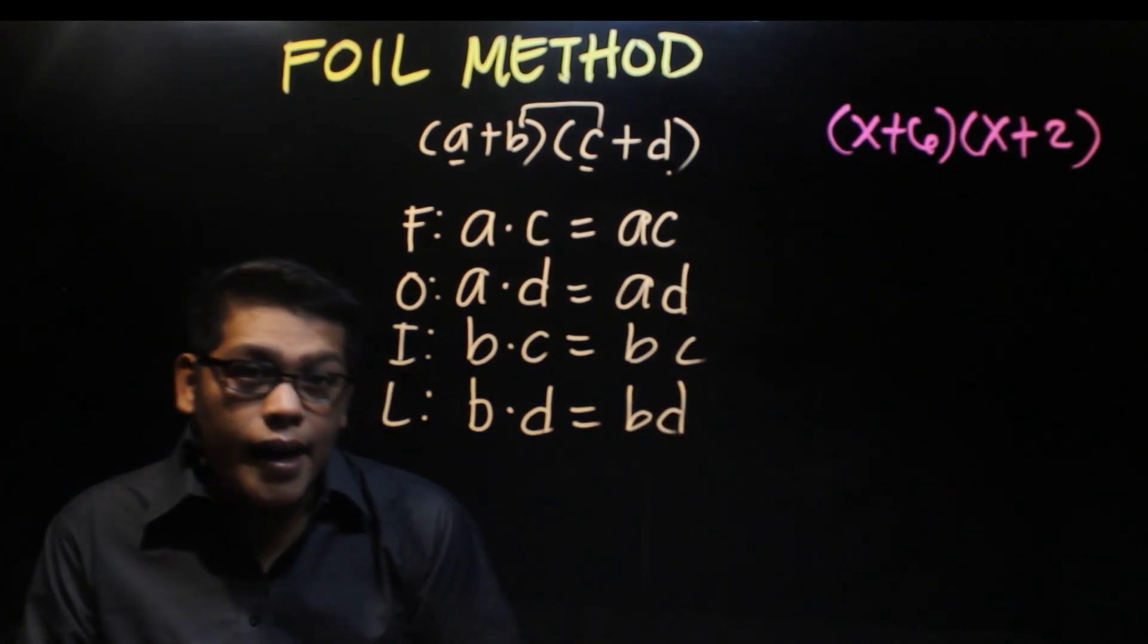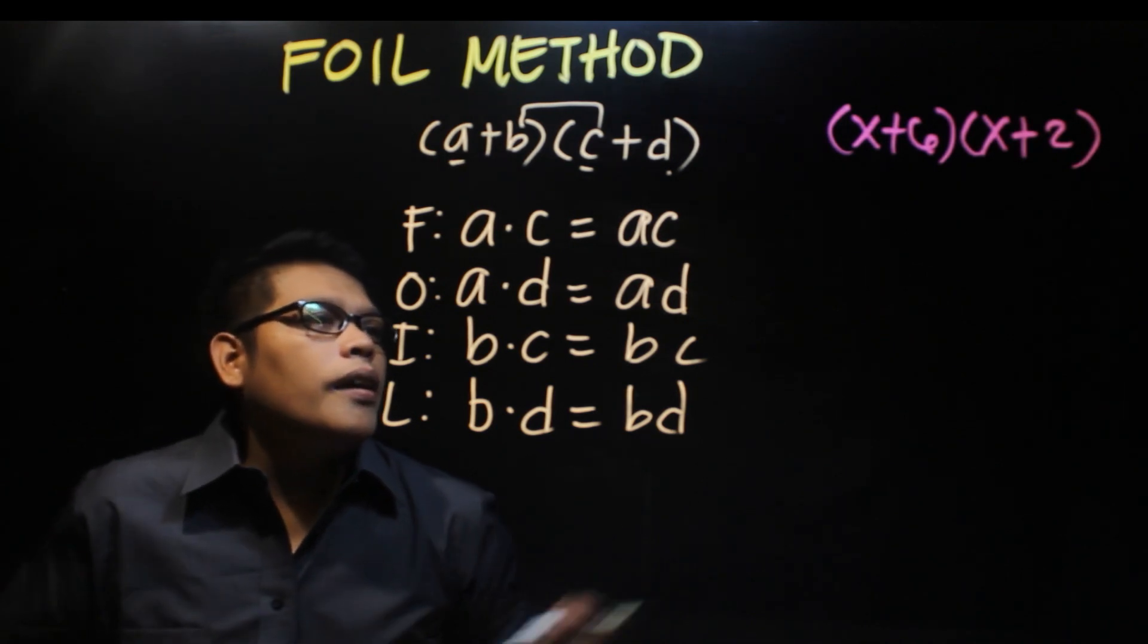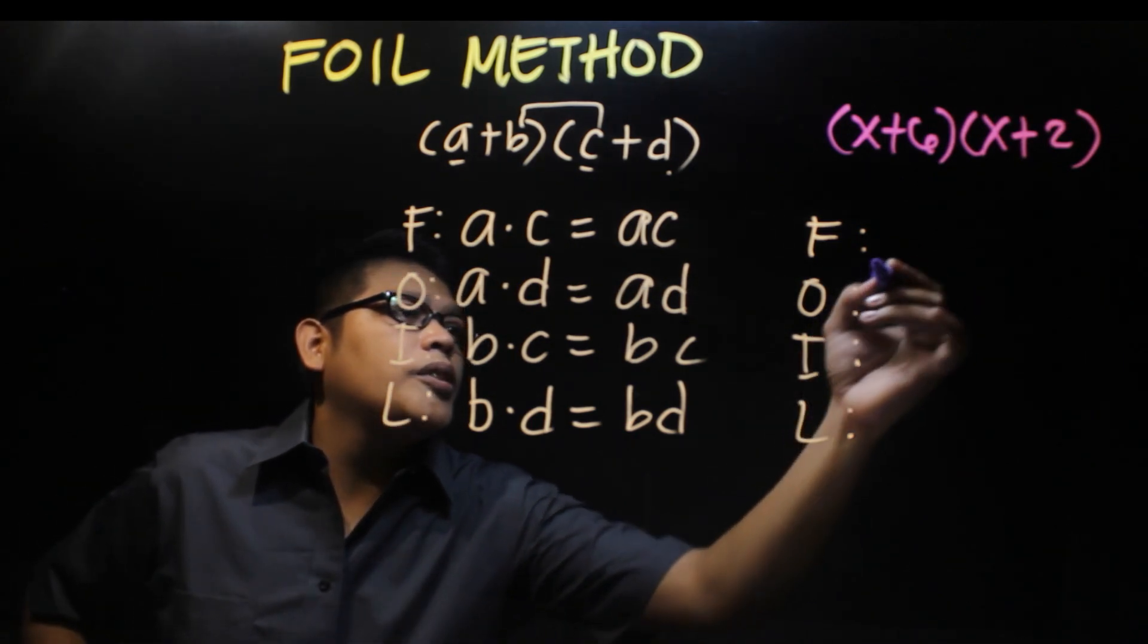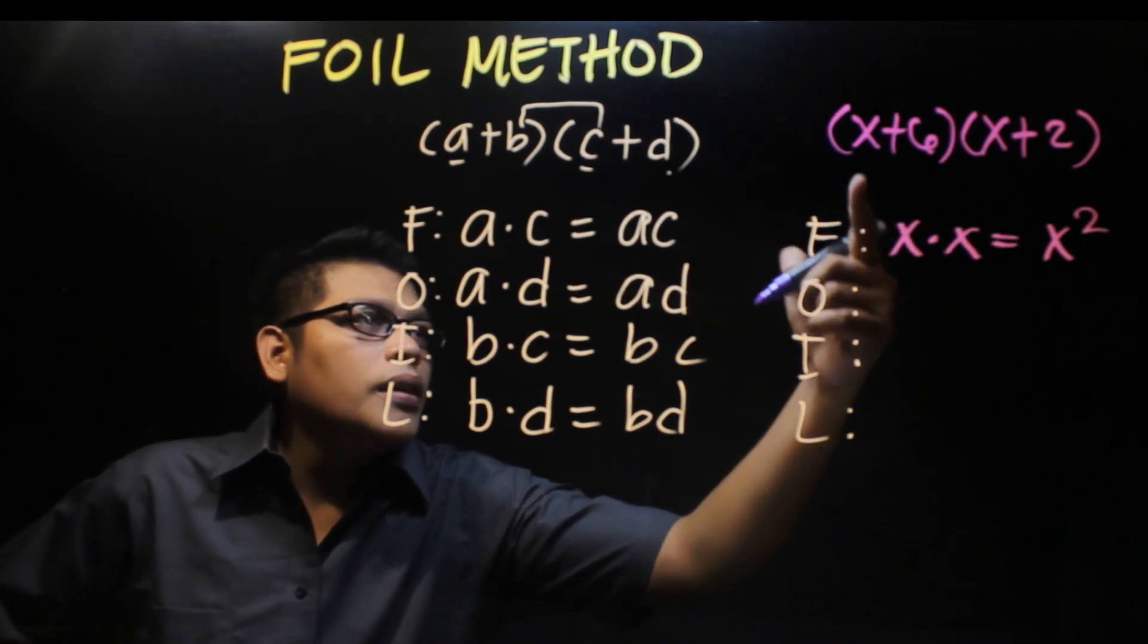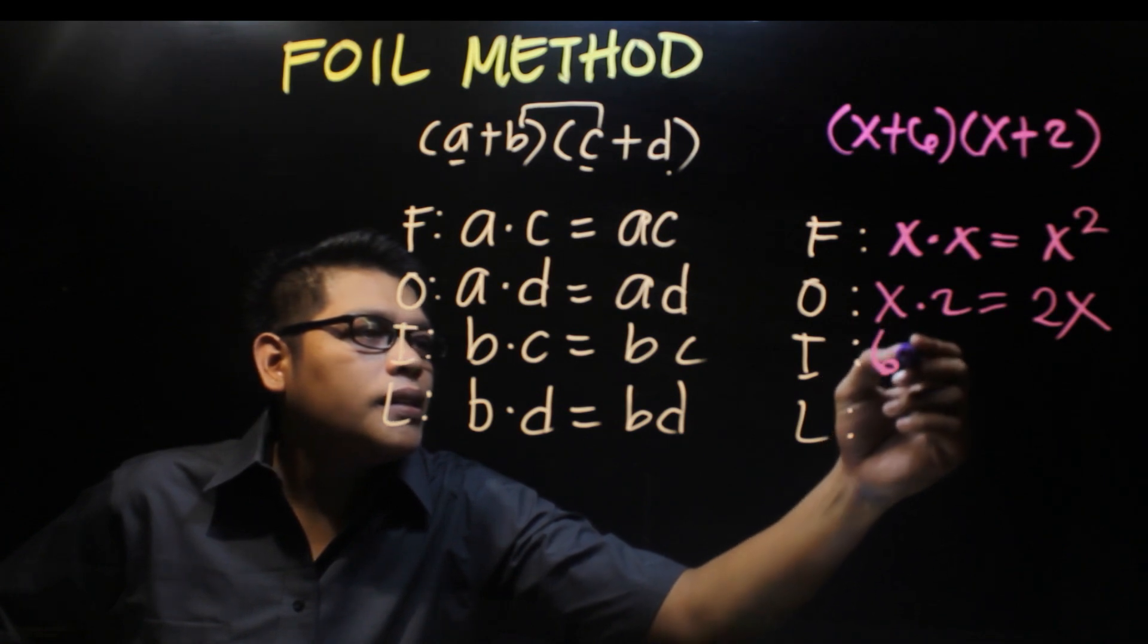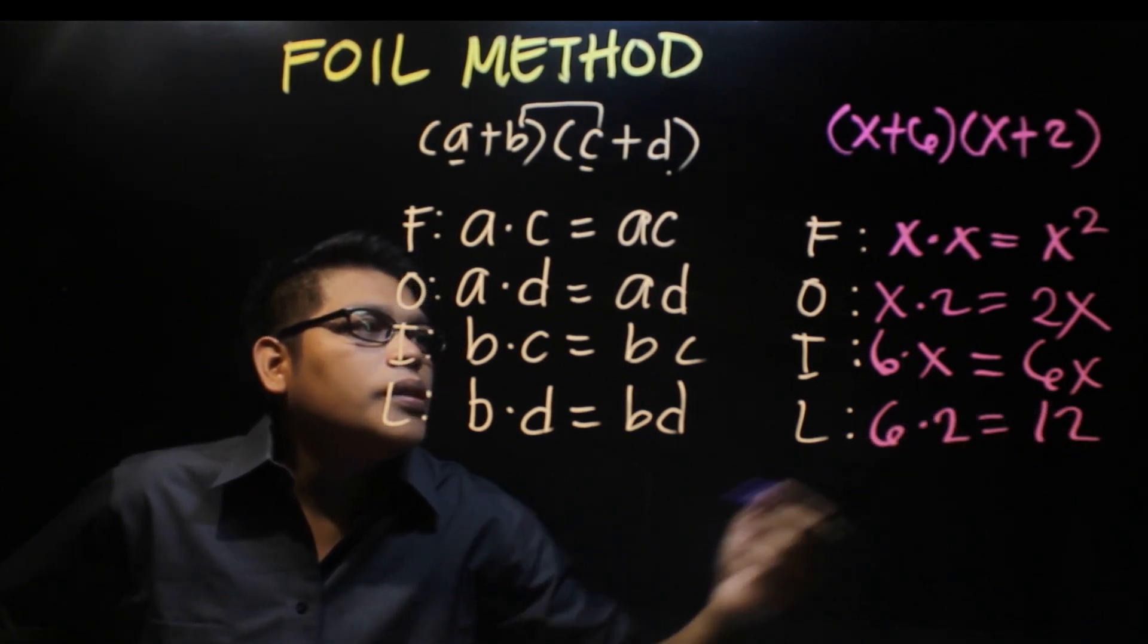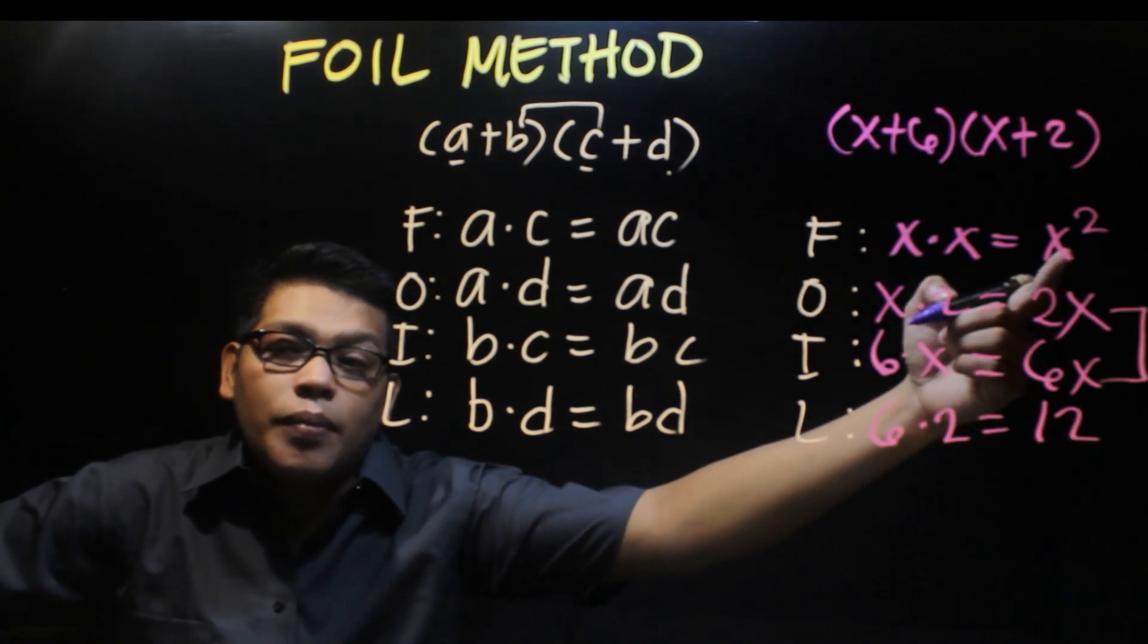That's how you multiply two binomials using the foil method. Let's solve (x+6) times (x+2). The F is first term times first term: x times x equals x². O is outside: x times 2 equals 2x. I is inside: 6 times x equals 6x. L is last: 6 times 2 equals 12. We have like terms that we can add: 2x and 6x.